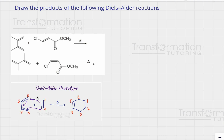In order to do this reaction, what do we have to do? First, we must identify our diene and dienophile. So let's look at our diene and dienophile: this is my diene and this must be my dienophile — double, single, double and a double bond. That's the first thing we have to do.